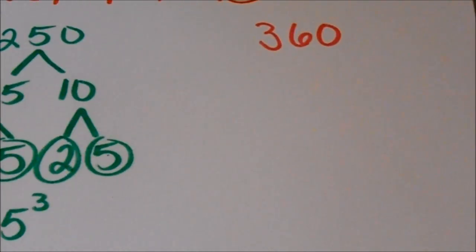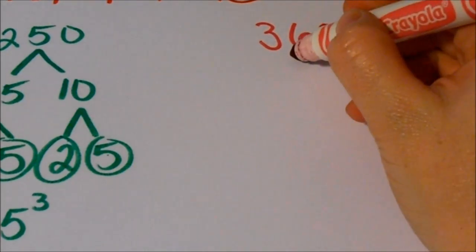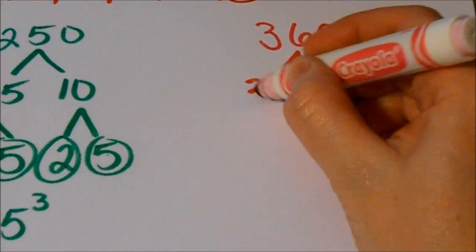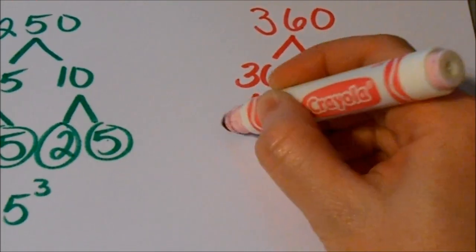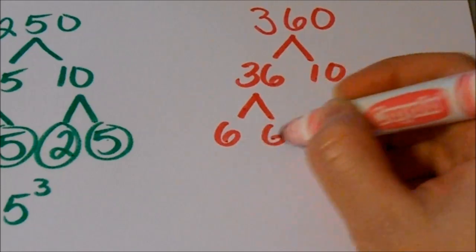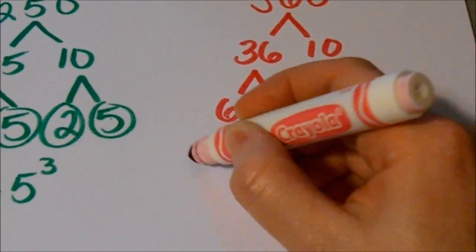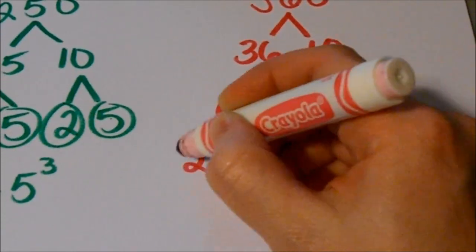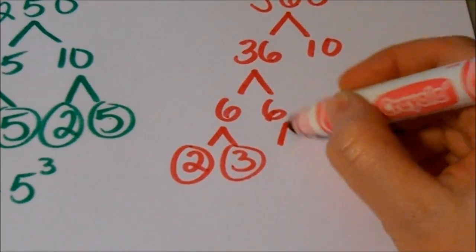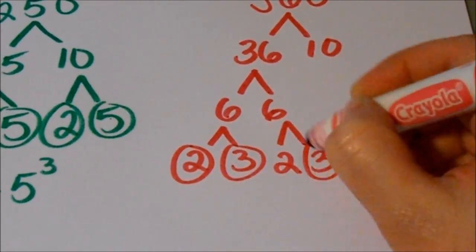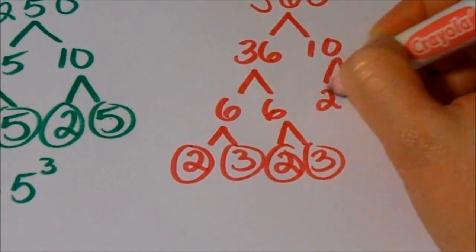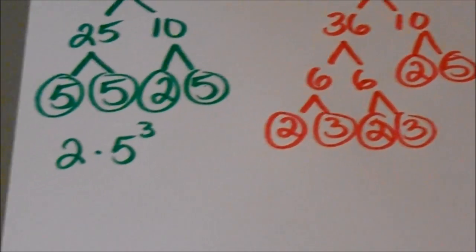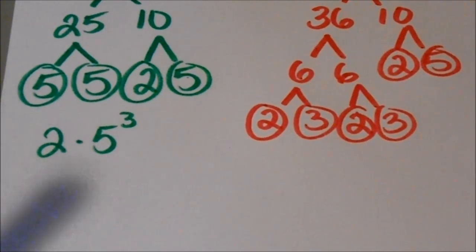So now I'm going to also factor 360 in the same way. I'm going to use the tree factorization. So 360 is 36 times 10. And then I'm going to factor each of these numbers. And then 6 is 2 times 3. And both of those are prime. 2 and 3. And then 10 is 2 and 5. So I've gotten down to all prime numbers for both of my larger numbers.